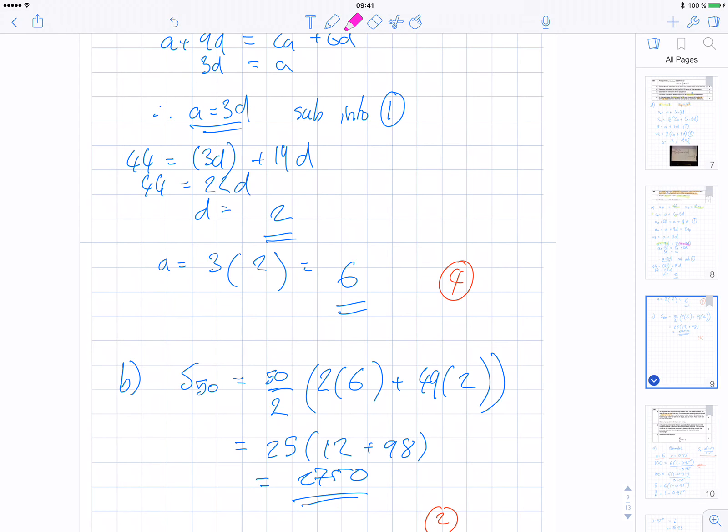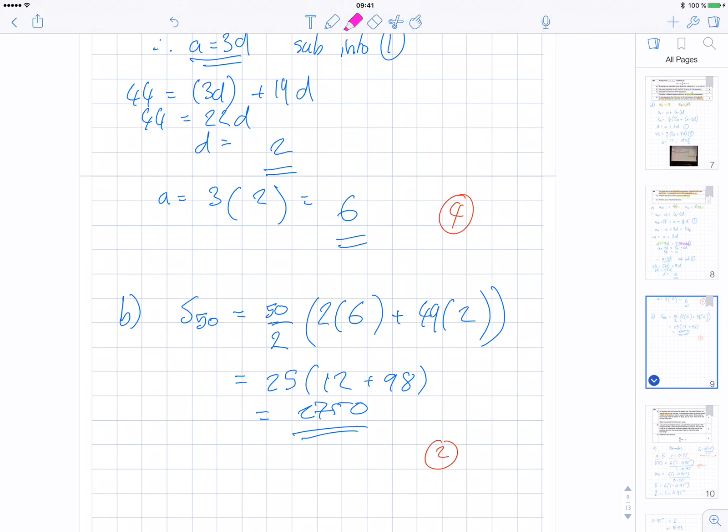So I substitute that in for b, the sum of 50 terms. So n over 2 times, open brackets, 2a plus 49 times 2. And I get 2,750. And that's it. I hope that helps.